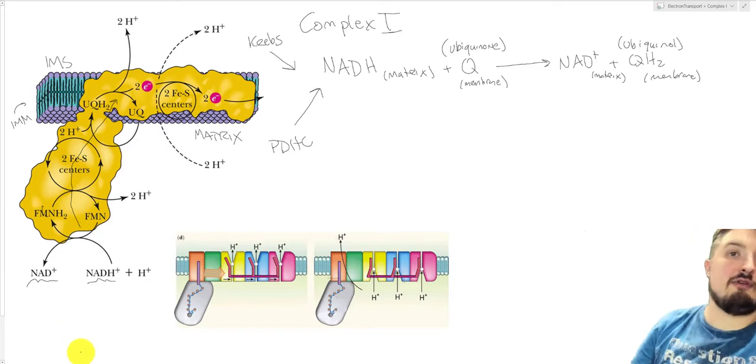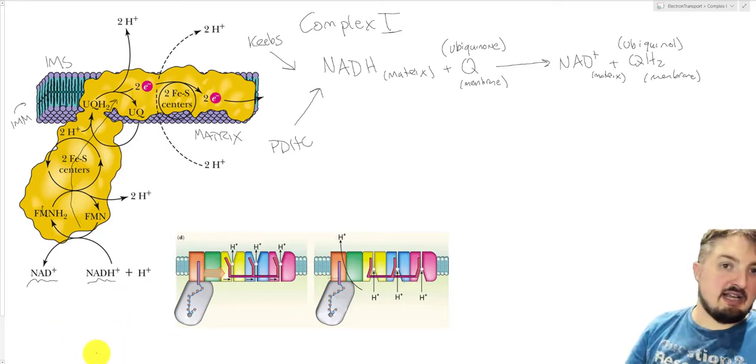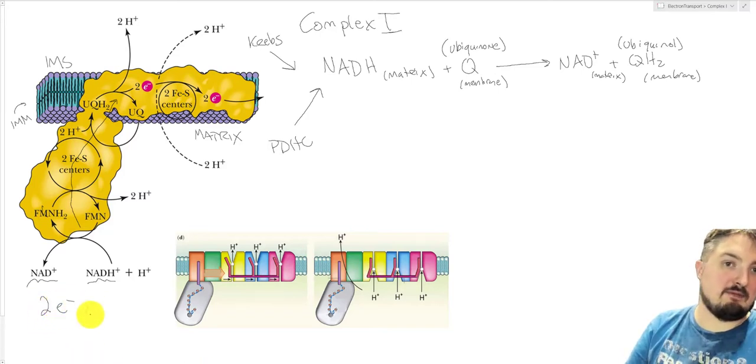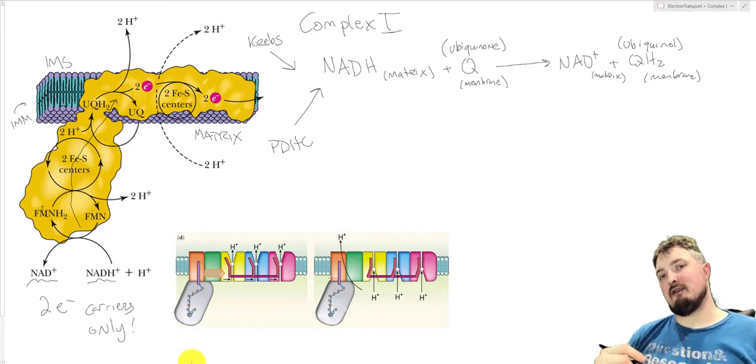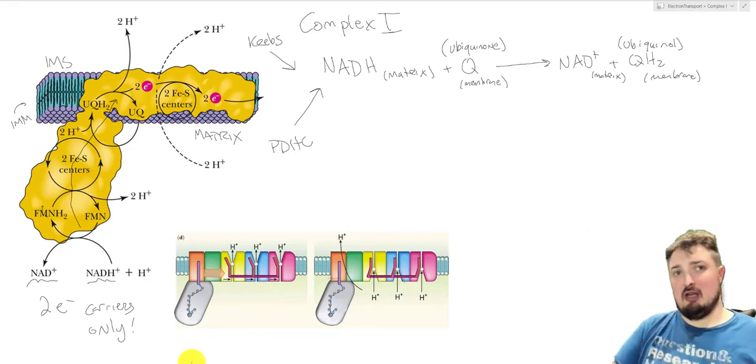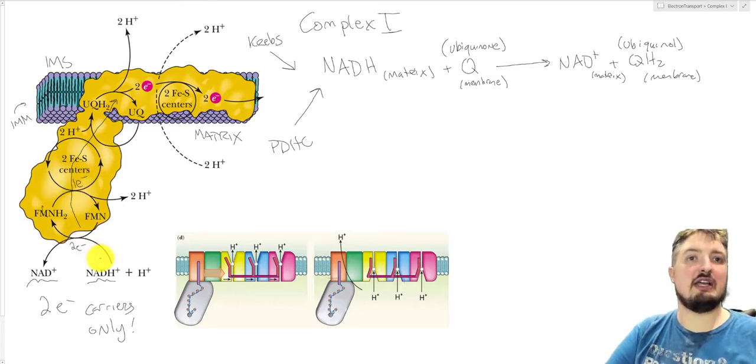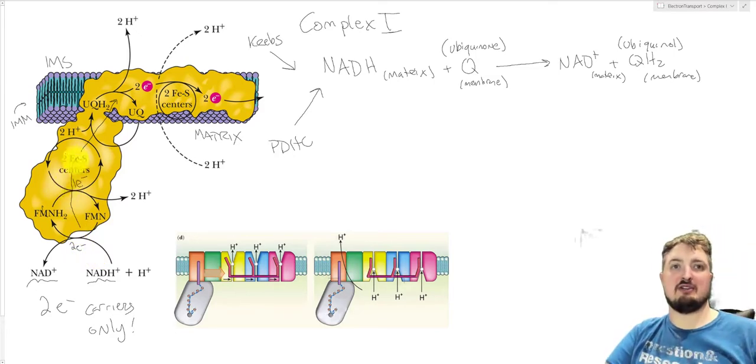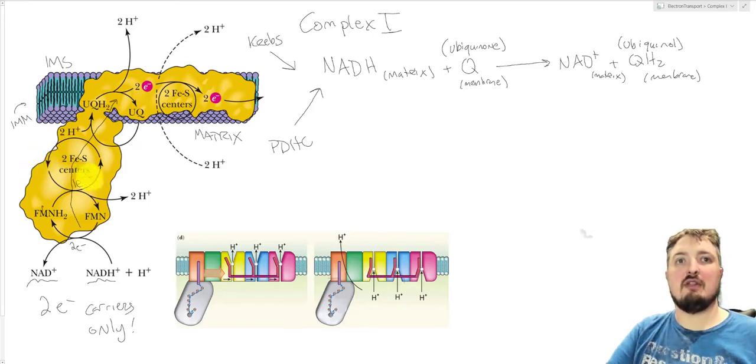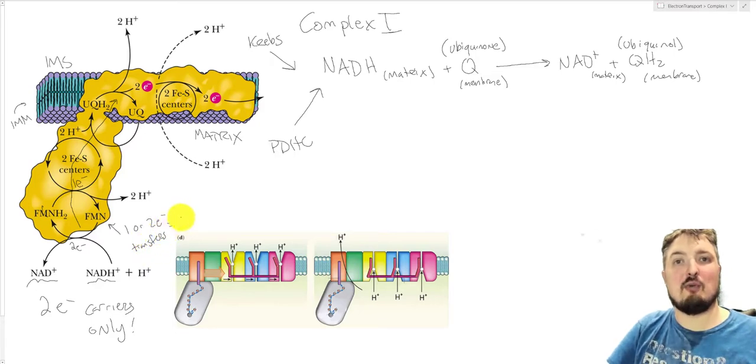If you remember from our discussions earlier in the term, NAD and NADH are obligate two-electron carriers, which means that they have to do twos. Unfortunately, for a lot of the things that are going on in the electron transport chain, the wiring that moves the electrons up through this lobe is actually only one electron at a time. Here we're moving two electrons into this chain, but the wires are set up because they're essentially iron atoms, a chain of iron atoms, that only allow one at a time.